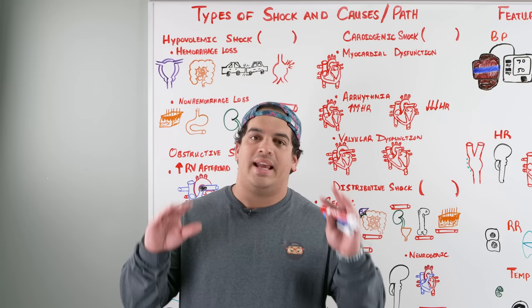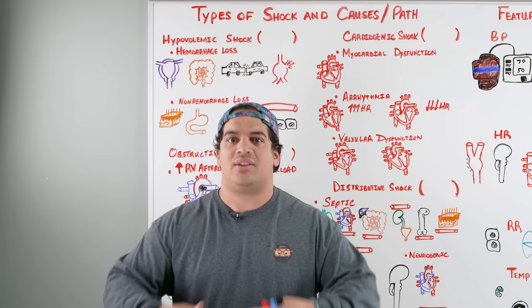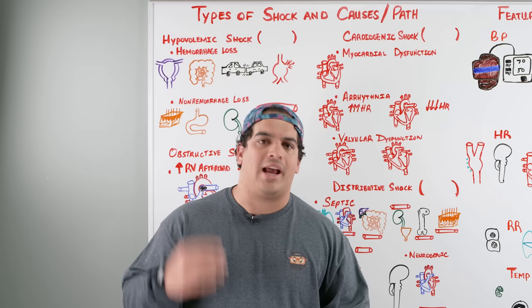Shock is inadequate perfusion to the tissues. When you don't give them an adequate amount of oxygen and nutrients, they start to fail. Tissues make up organs, so if tissue cells fail, the organ will fail, and if organs fail, this leads to multi-system organ failure that can quickly progress to death.